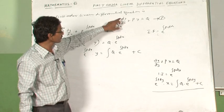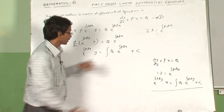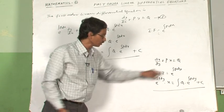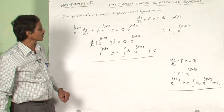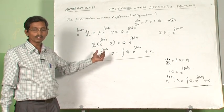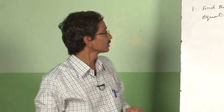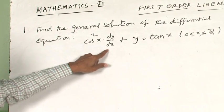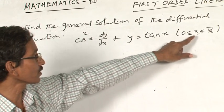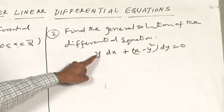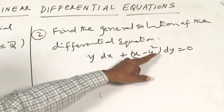So children, when the differential equation is of the form dy by dx plus P y equals Q, we use the first general solution. If the differential equation is of the form dx by dy plus P x equals Q, we use the second general solution. Now I will do some problems. Question 1: find the general solution of cos squared x times dy by dx plus y equals tan x, where 0 ≤ x < π/2. Question 2: find the general solution of y dx plus (x minus y squared) dy equals 0.